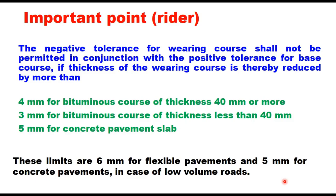While accepting the levels or tolerance limits of levels, it should be remembered that the negative tolerance for wearing course shall not be permitted in conjunction with the positive tolerance for base course. If thickness of the wearing course is reduced by more than 4 mm for bituminous course of thickness 40 mm or more, or 3 mm for bituminous course of thickness less than 40 mm, and 5 mm for concrete pavement slab — these limits are 6 mm for flexible pavements and 5 mm for concrete pavements in case of low volume roads. These are the guidelines given in MORTH specification and in MORD 2014.